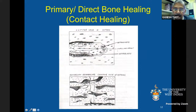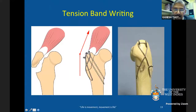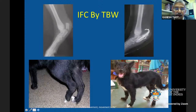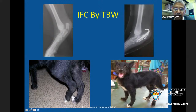Tension band wiring is used for fractures at certain bone locations. We use small pins or K-wires and orthopedic wires so that the distraction force is counteracted and ends with interfragmentary compression for the fracture to heal without callus — primary healing. For example, a fracture of the calcaneus or tuber calcis repaired with tension band wiring allows the animal to weight-bear as soon as the very next day after surgery.